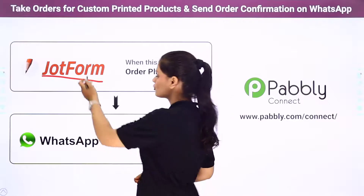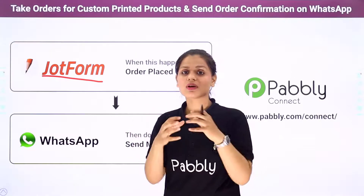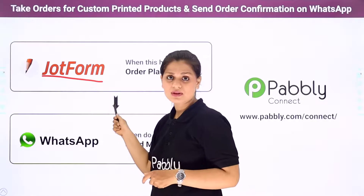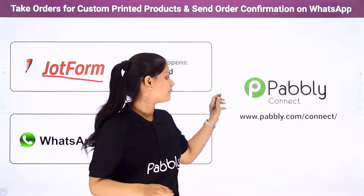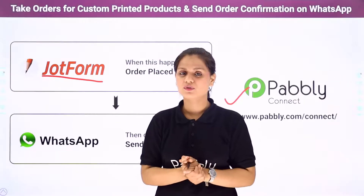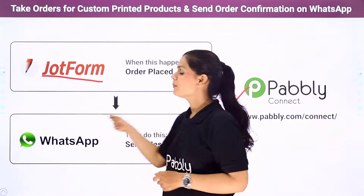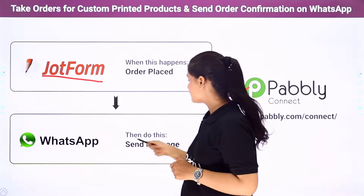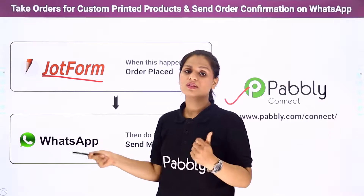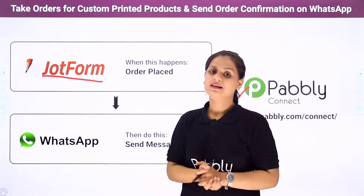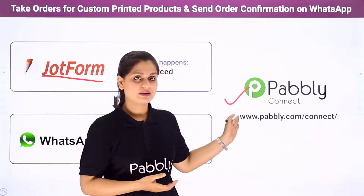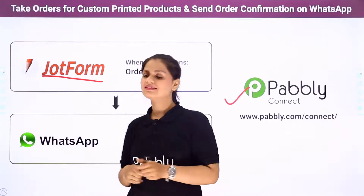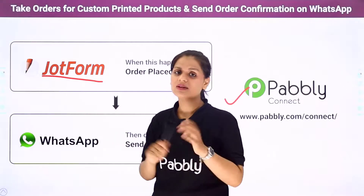There is an issue — JotForm and WhatsApp do not have any integration between them; they are not linked. So to perform this task, I need to create a link between them using Pably Connect. Pably Connect is an automation and integration software that will build an automation between JotForm and WhatsApp. Whenever an order is placed in JotForm, a message will be sent automatically to the customer and the owner. The best part is you do not need coding skills or programming knowledge — it is very easy to use.